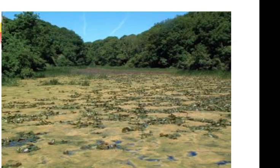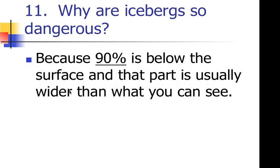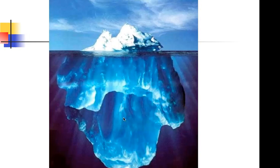We talked about the Titanic a little bit — it sank because it hit an iceberg. An iceberg is so dangerous because 90% of it is below the surface, and that underwater part is usually wider than what you see above. So if you're approaching an iceberg, by the time you can see it, you've probably already hit it. Hopefully you've written down '90' on number 11 in your notes. The picture shows only the tip above water — the most massive part is underneath.